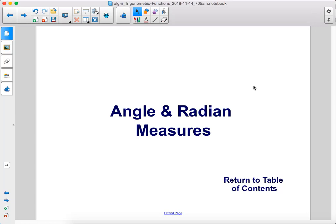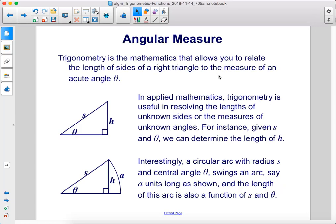Angle and Radian Measures. Trigonometry is the mathematics that allows you to relate the length of sides of a right triangle to the measure of an acute angle theta.